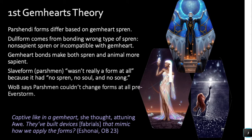Brandon goes even further to say that Parshmen, even if taken out into a highstorm, did not have the ability to change forms at all pre-Everstorm. So Parshmen could not have bonded a spren even if taken hand-in-hand with a spren into a highstorm — it would not have happened. Knowing how Parshendi bond spren, what's the one thing that would have prevented them? The obvious logical conclusion to me is that Parshmen lacked Gemhearts — that they did not have Gemhearts.